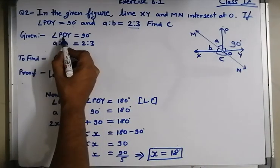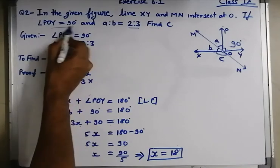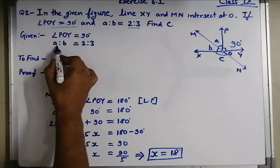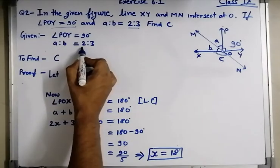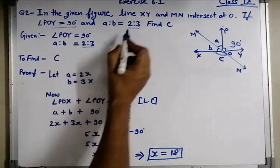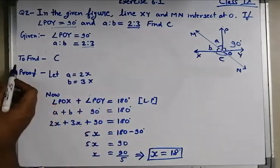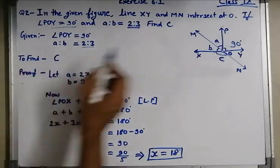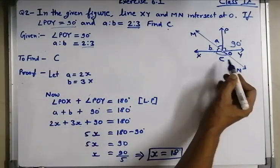Given: angle POY is equal to 90 degrees, already given. A is to B is equal to 2 is to 3, it is already given in the question. To find: we have to find angle C.